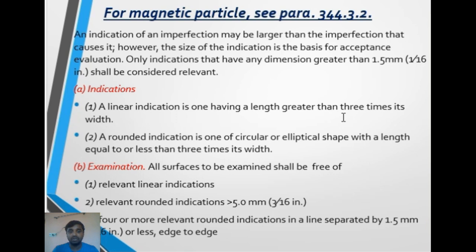A linear indication is one where the length is greater than three times the width. A rounded indication is one of circular or elliptical shape where the length is equal to or less than three times the width. A relevant linear indication is not acceptable.